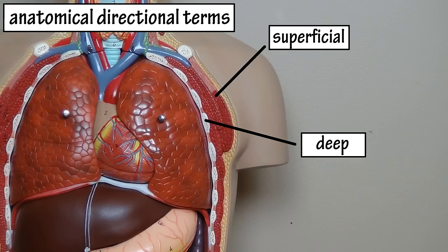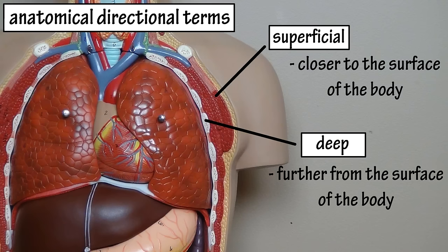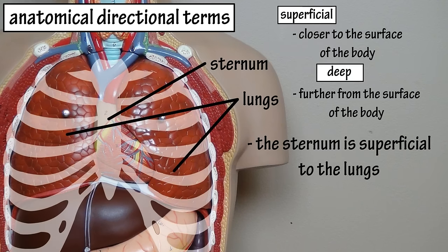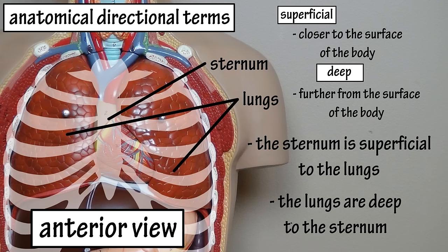Superficial and deep are another set of directional terms. Superficial means closer to the surface of the body, and deep means further away from the surface of the body. So we would say the sternum is superficial to the lungs, or the lungs are deep to the sternum. Remember, this is the case when we are looking at the body from the front or anterior view, when it is in the anatomical position.